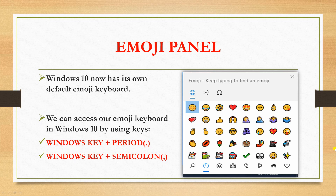Next and last is the emoji panel. Windows 10 now has its own default emoji keyboard. We can access the emoji keyboard in Windows 10 by using the keys: first, Windows key plus period or dot, and second, Windows key plus semicolon. We will get this window with a lot of emojis available.